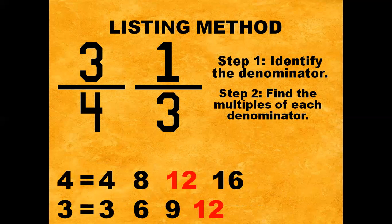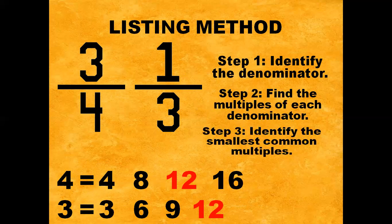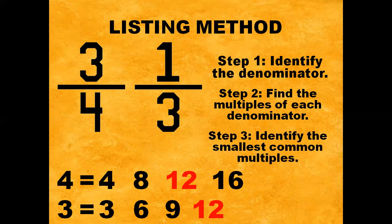Step number three: identify the smallest common multiple of four and three. In this case, the LCM or Least Common Multiple for four and three is twelve. In short, the LCD for four and three is twelve.